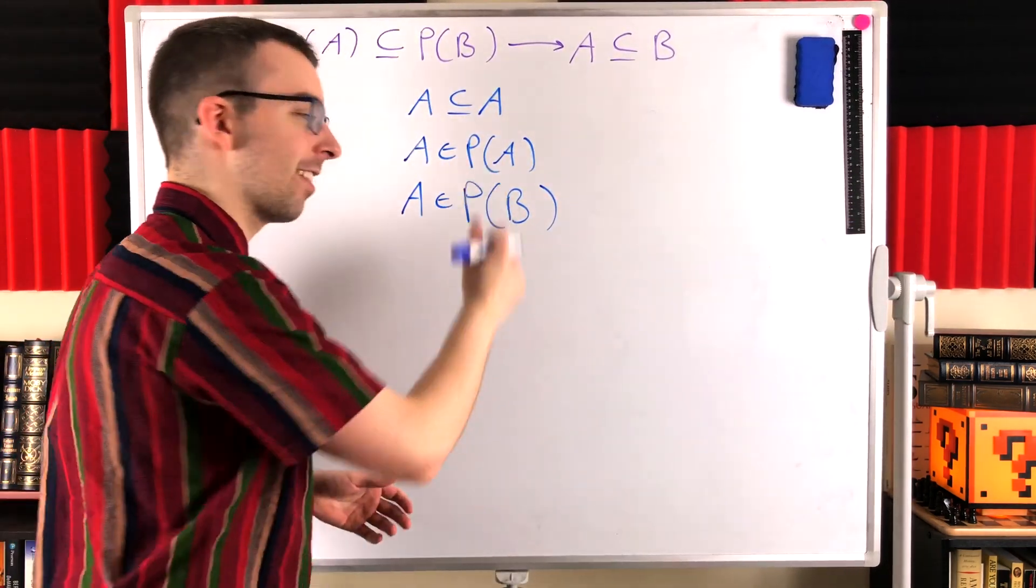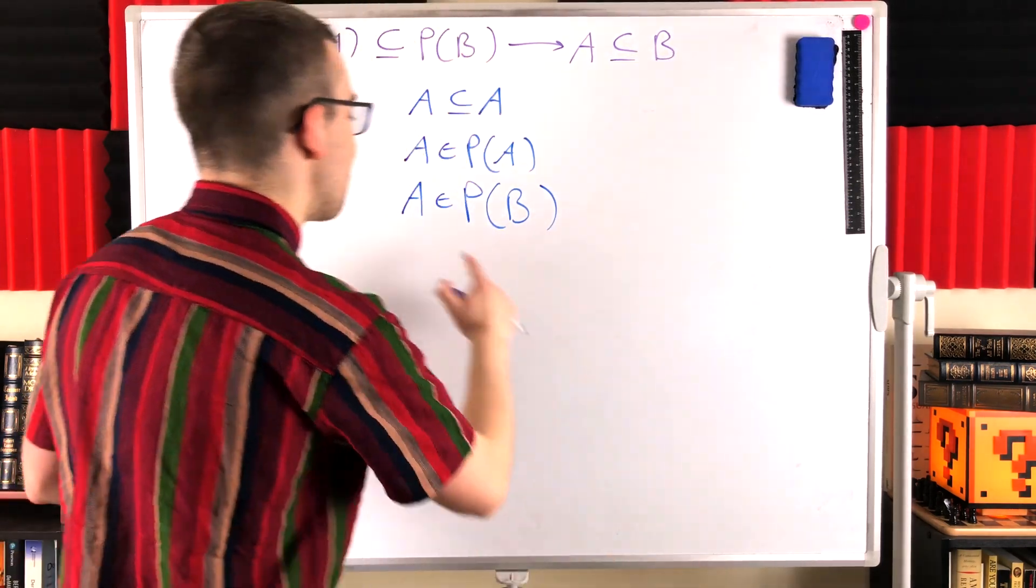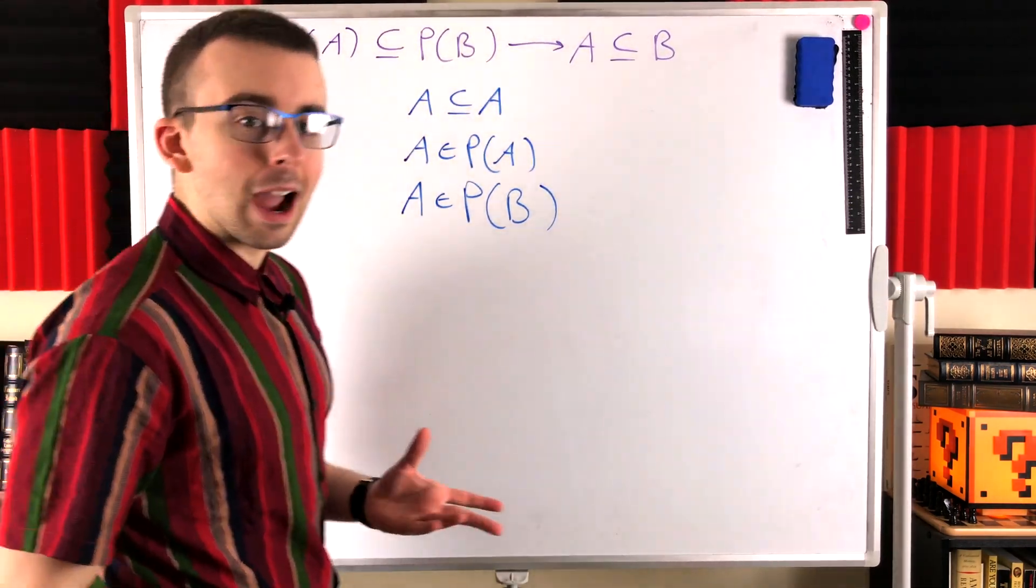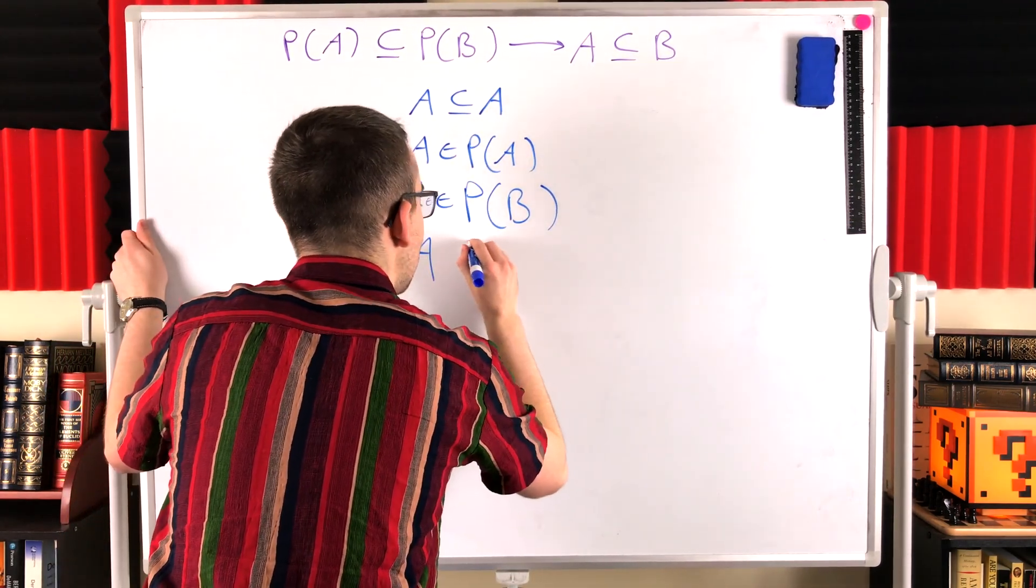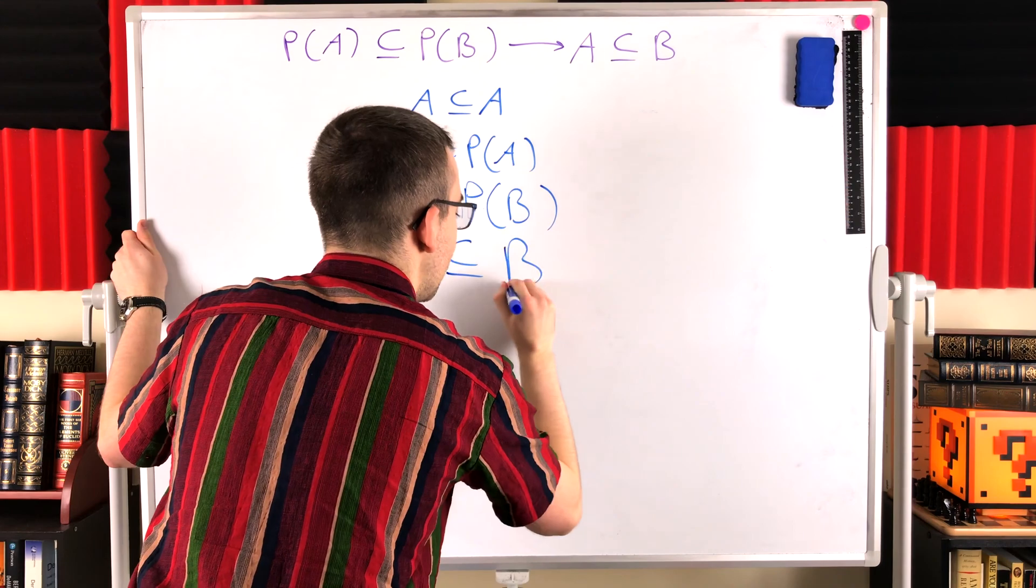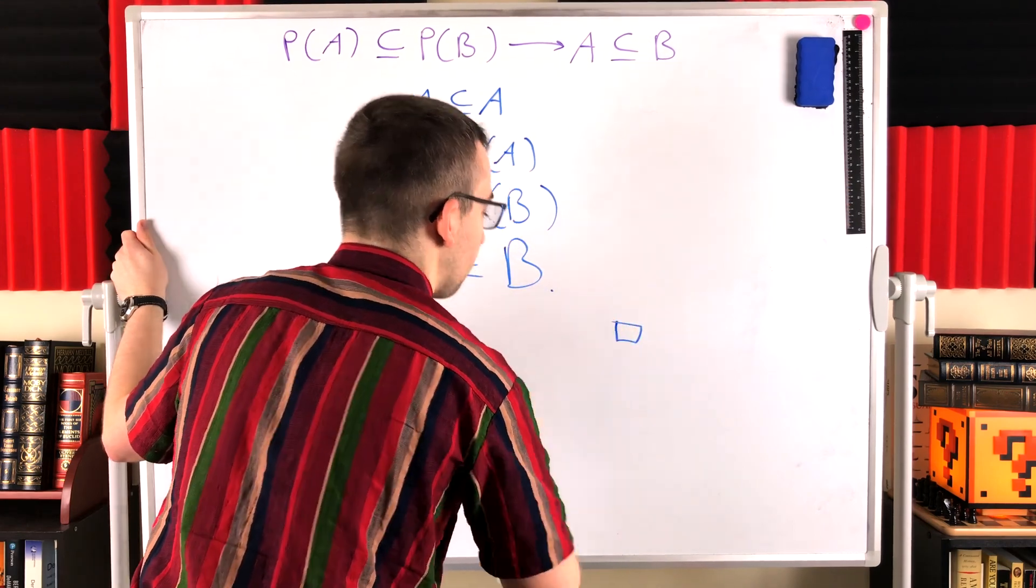And look at that, the next line is the end of the proof. What does that mean for A to be an element of the power set of B? Well, by definition of power set, that means that A has to be a subset of B. Bada bing, bada boom, there's the proof.